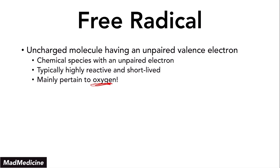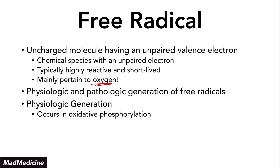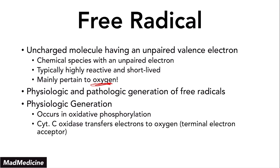Free radicals are generated both pathologically but also physiologically — it is also a normal part of our body to generate free radicals. One example of physiologic free radical formation would be the oxidative phosphorylation cascade. Free radicals are formed during oxidative phosphorylation because cytochrome C oxidase actually transfers electrons to oxygen, which is the final or terminal electron acceptor in the oxidative phosphorylation cascade.